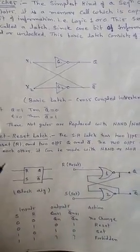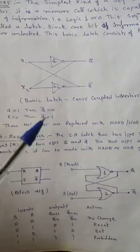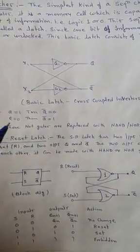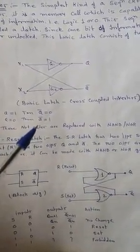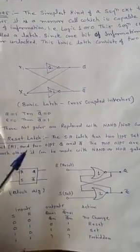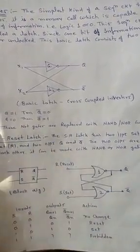Complementary output means that these two outputs are always complement to each other. When q is 1, q bar is 0, and when q is 0, q bar is 1. The latch circuit may be designed by using NAND or NOR gate also.